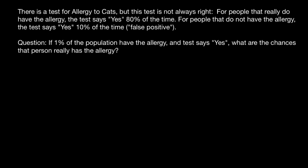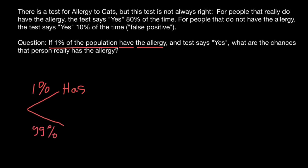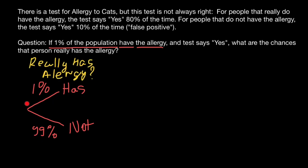According to our problem, we are told that 1% of the population have the allergy. So we have a population where 1% has allergy, which means that 99% of the population doesn't have allergy. Our first step was to separate the whole population into two distinct groups.